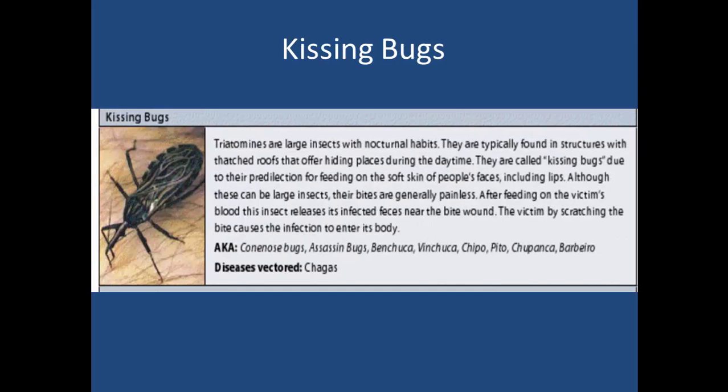Kissing bugs are found primarily in the Americas and can be pretty big. They're typically found in structures with thatched roofs and usually bite during the nighttime when you're sleeping. They leave a little tiny mark on your skin that almost looks like a little kiss — just a little red spot when they bite. But they can cause a disease called Chagas disease.